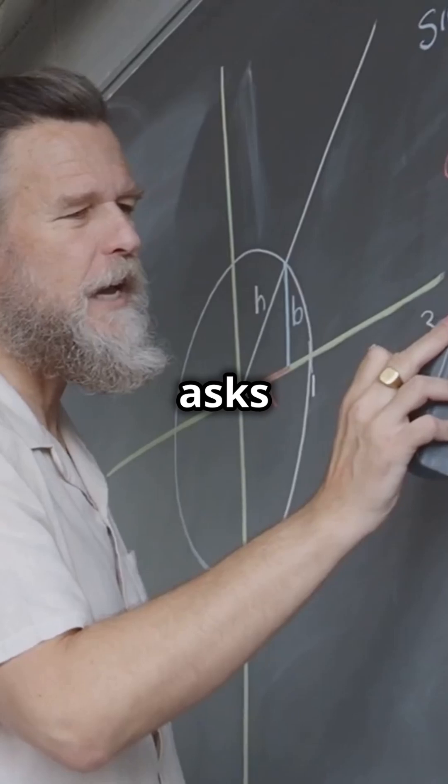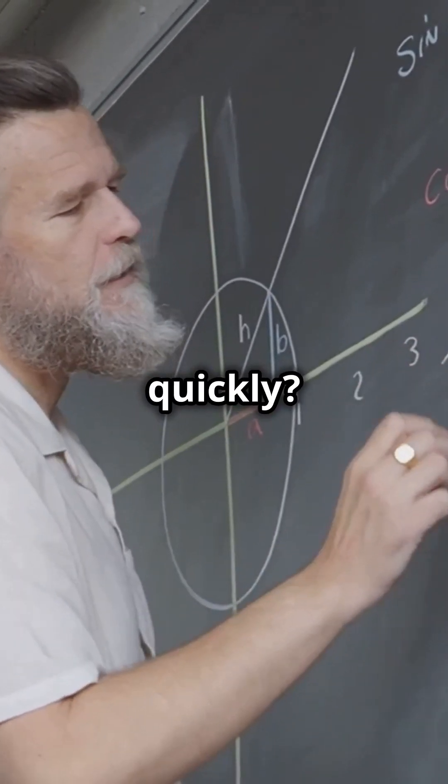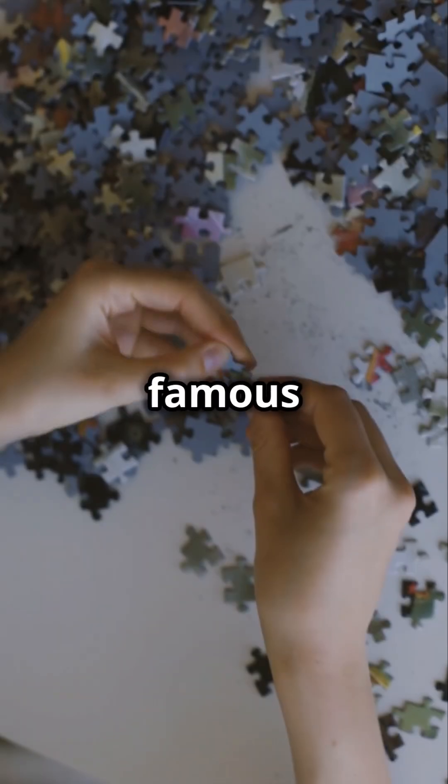Simply put, it asks if we can verify a solution quickly, can we also find that solution quickly? Back in 1971, Stephen Cook formulated this head-scratcher in his famous paper.